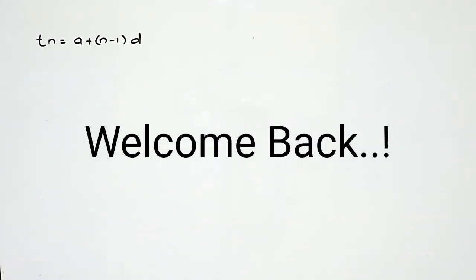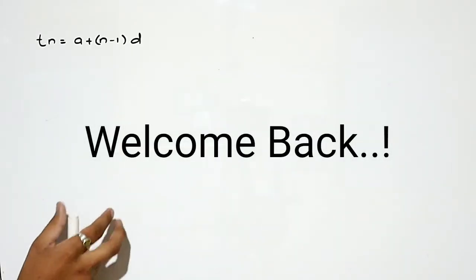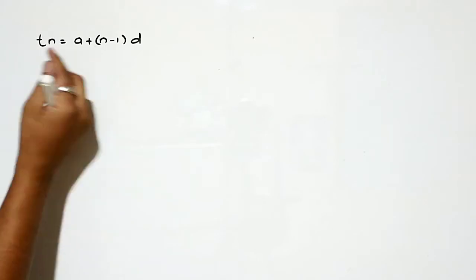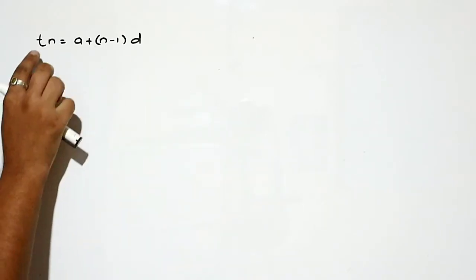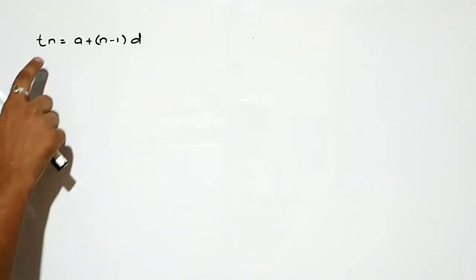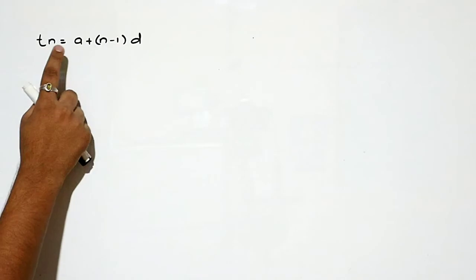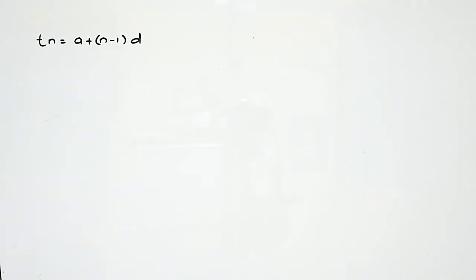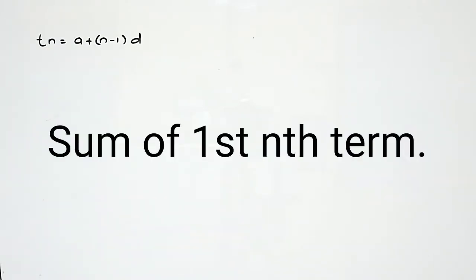Welcome back to my YouTube channel Loveyaz Academy. In the previous lecture we learned about the nth term of an AP, and the general formula is tn = a + (n-1)d. In this lecture we will see the sum of first n terms in an AP.